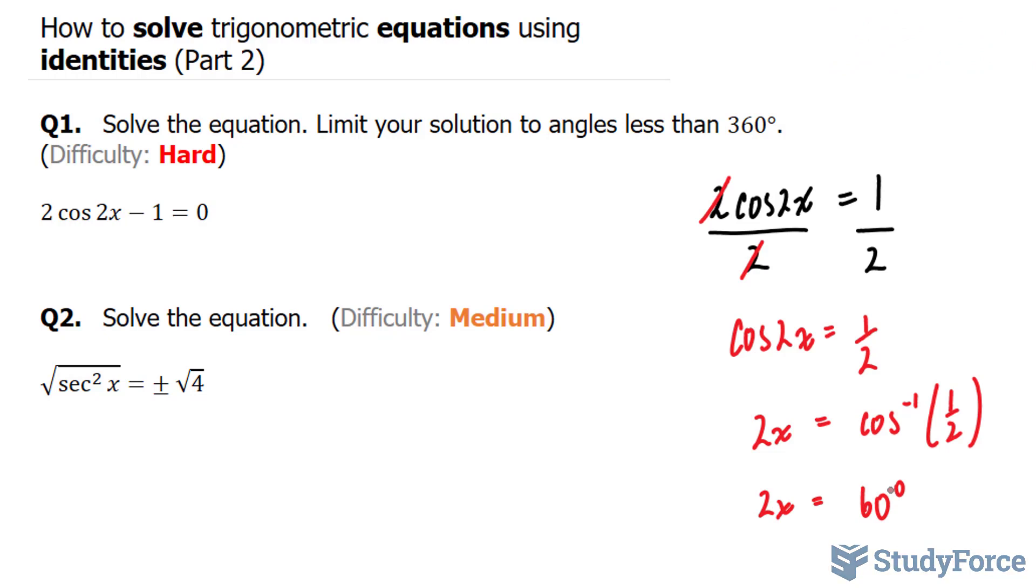Since cosine has a positive ratio of half, it's positive. Cosine is positive according to the cast rule in the fourth and first quadrant. So it's going to be right here and here. And 60 degrees represents our reference angle. So this is our reference of 60 degrees.